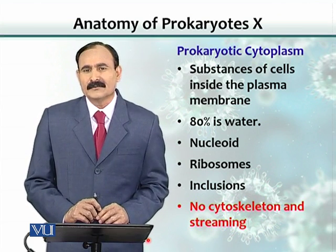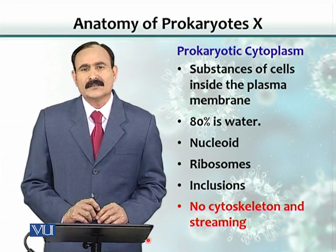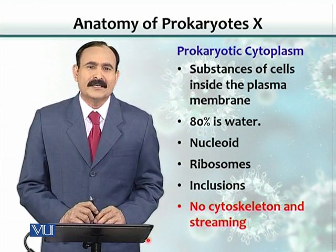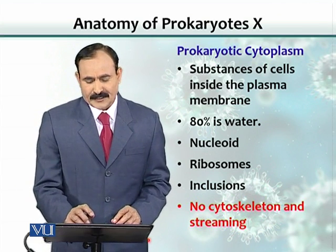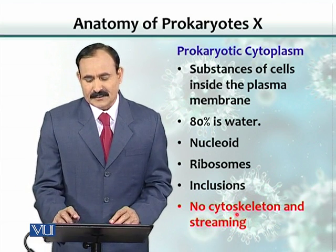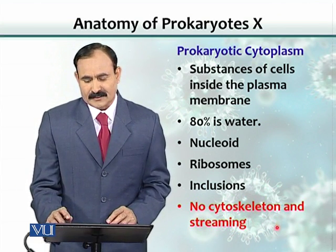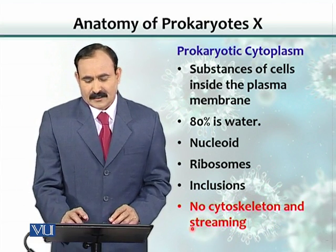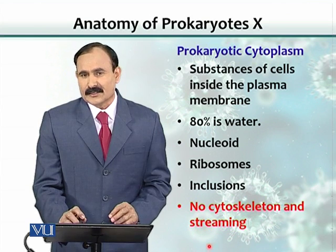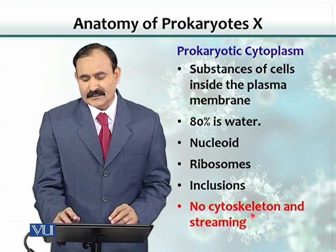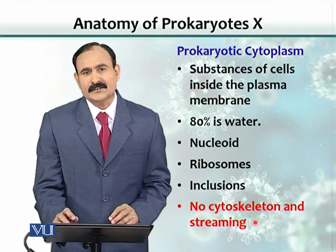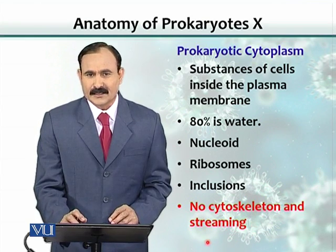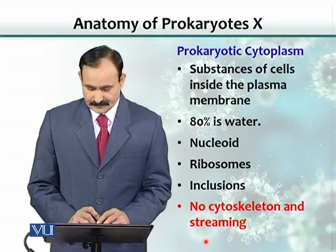In prokaryotes, the shape is maintained by the cell wall, so there is no need for a cytoskeleton. Streaming also occurs because of the cytoskeleton, so as there is no cytoskeleton present, there is no streaming in prokaryotes.